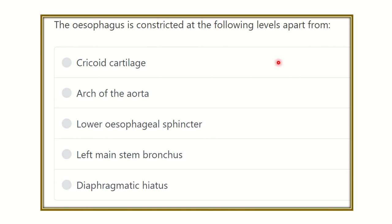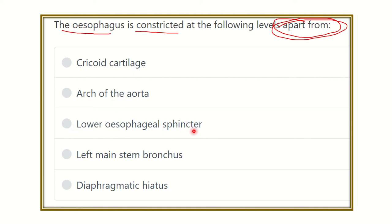The question asks at which level the esophagus is NOT constricted. The options are: at the level of the cricoid cartilage, at the level of the arch of the aorta, at the level of the lower esophageal sphincter, at the level of the left main stem bronchus, and at the level of the diaphragmatic hiatus.